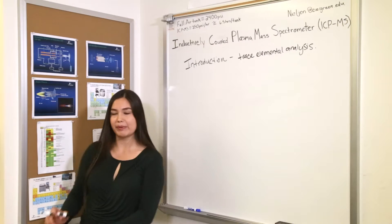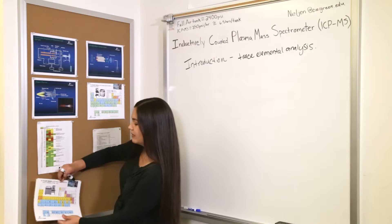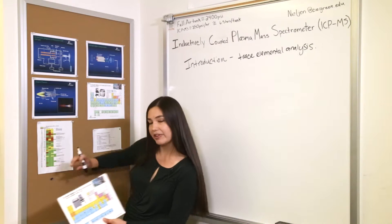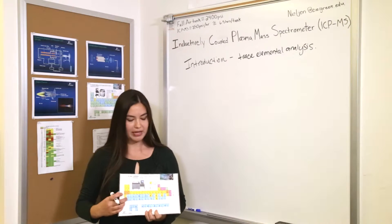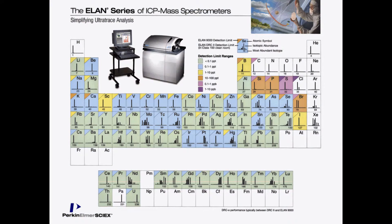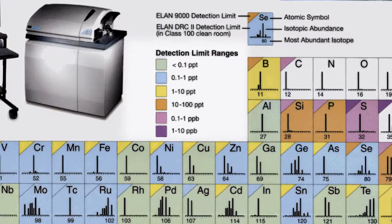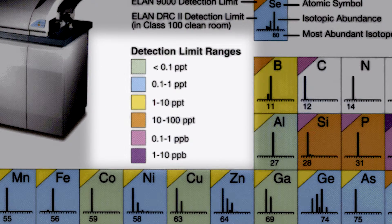To give you an example of the range of elements, we can look at the periodic table that's in the ICP-MS room. On this periodic table, all of the colored elements are ones that we can analyze for, and the colors indicate what their approximate detection limits are for this model of instrument.